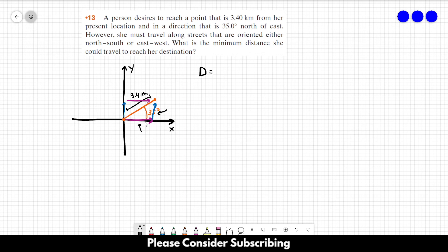is the purple component which is 3.4 times the cosine of 35 degrees, plus the Y component which is 3.4 times the sine of 35 degrees.